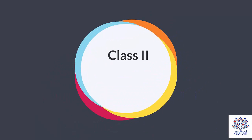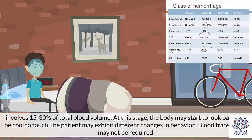Class II hemorrhage involves 15–30% of total blood volume. At this stage, the body may start to look pale and be cool to touch. The patient may exhibit different changes in behavior. Blood transfusion may not be required.